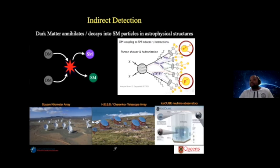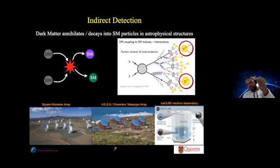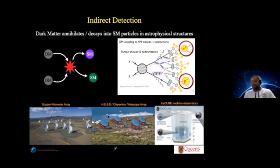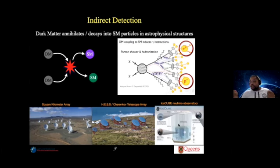Dark matter can annihilate at the galactic center or in the Sun into final-state cosmic rays, photons, or neutrinos. We can detect radio signals at the Square Kilometre Array, gamma rays, and neutrinos from dark matter annihilations at experiments like IceCube. There are many tools at our disposal — IceCube, the upcoming DUNE experiment, and many others — to search for these annihilation products.